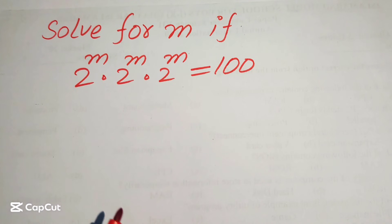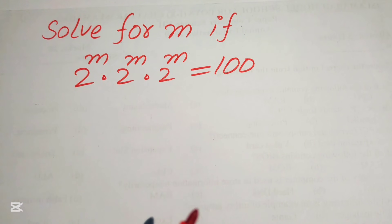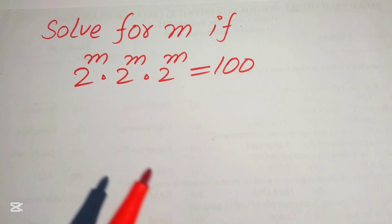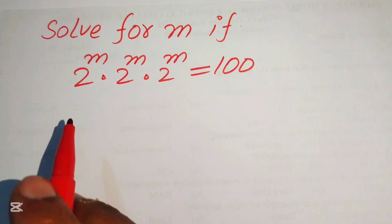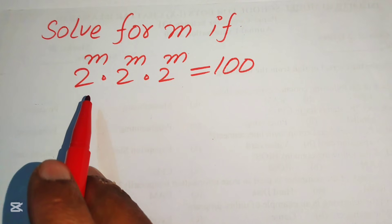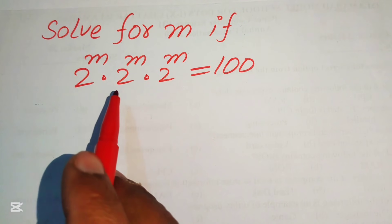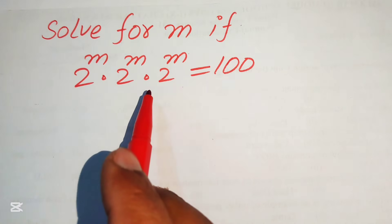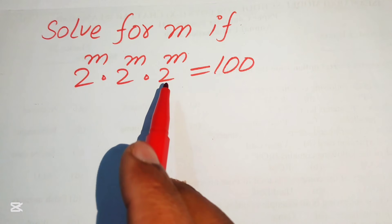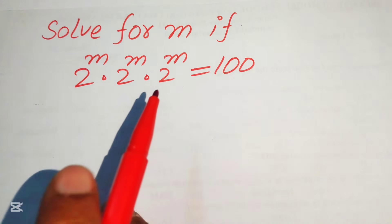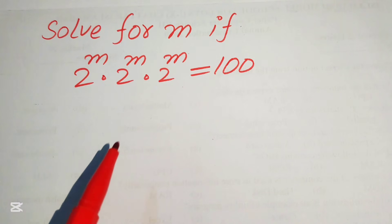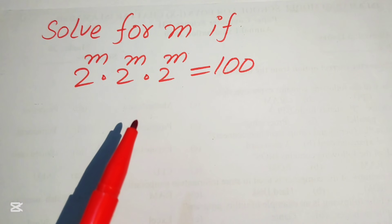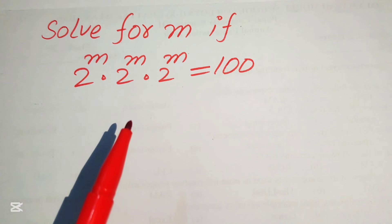Hello everyone, welcome. We solve this exponential equation problem: 2 to the power of m, multiplied by 2 to the power of m, multiplied by 2 to the power of m, equals 200. We solve this problem for the values of m.